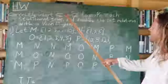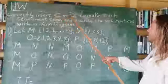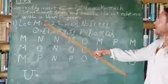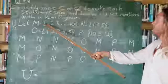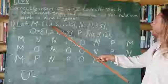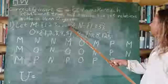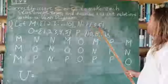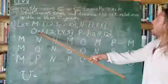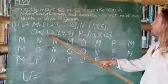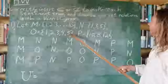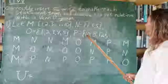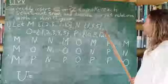Let's tackle the first part first. Here are our sets again: let M equal the set 1, 2, 3 through 10; N equal the set 1, 3, 5; O equal the set 1, 2, 3, 4, 5; and P equal the set 10, 8, 12.